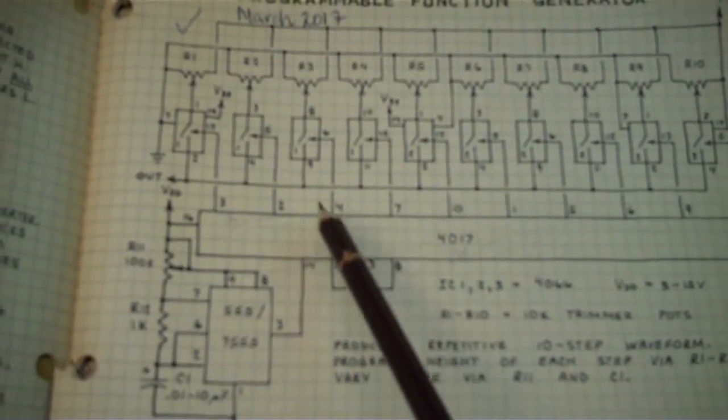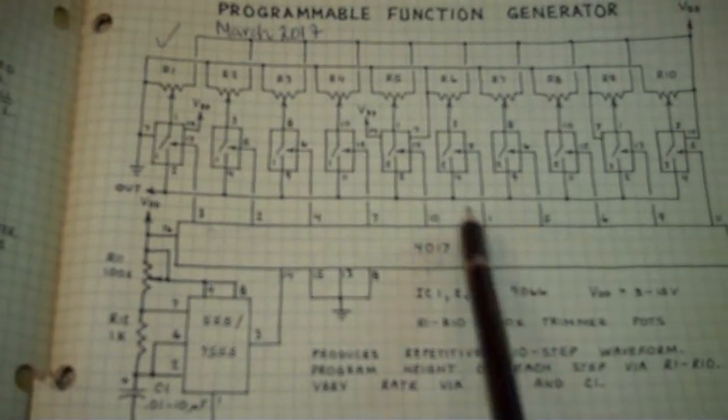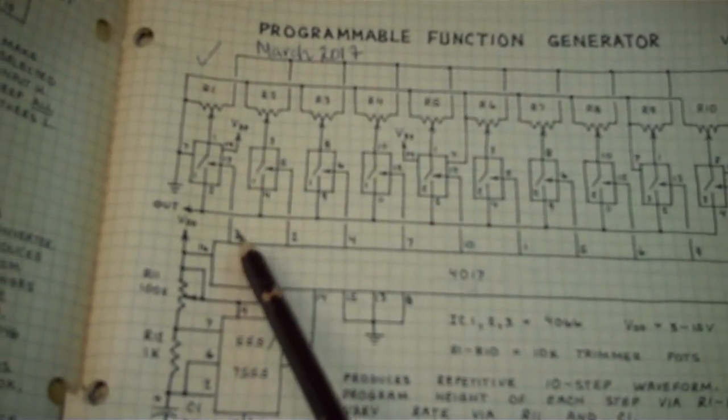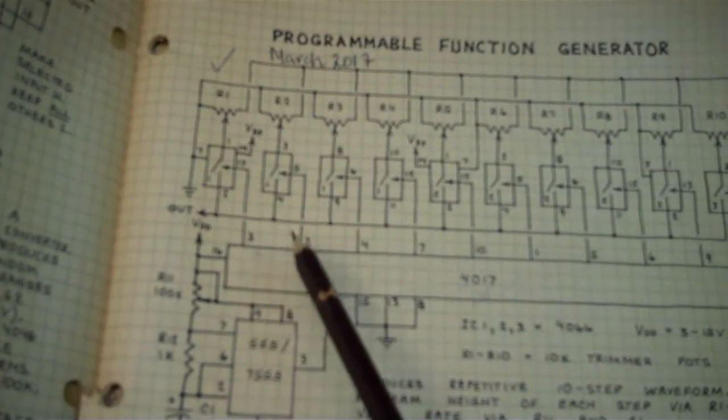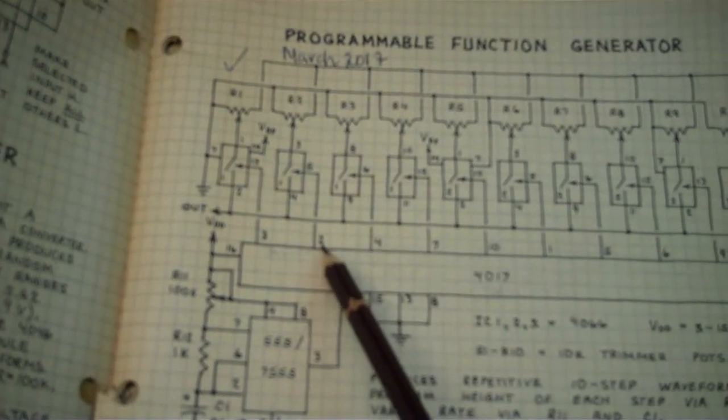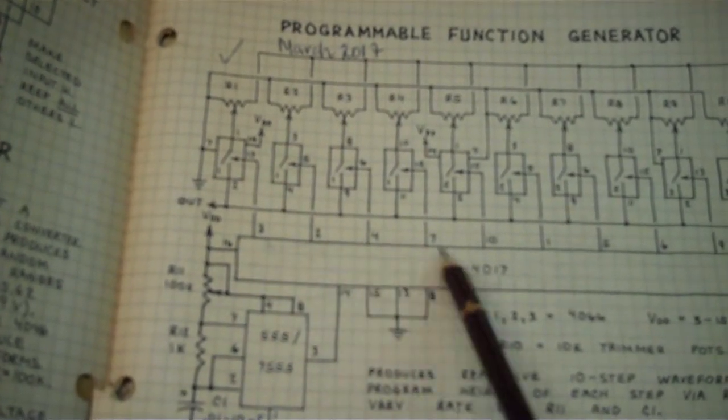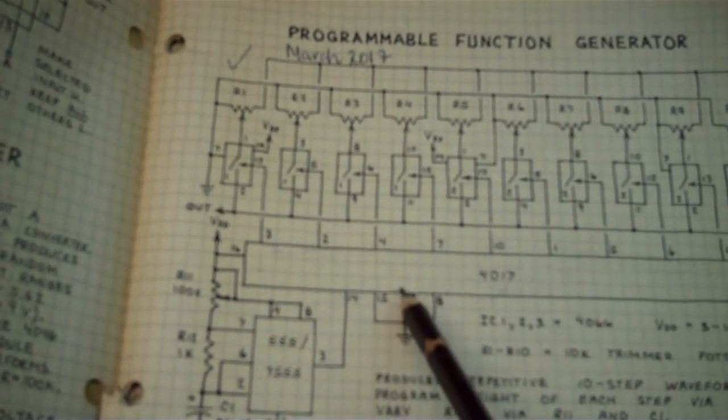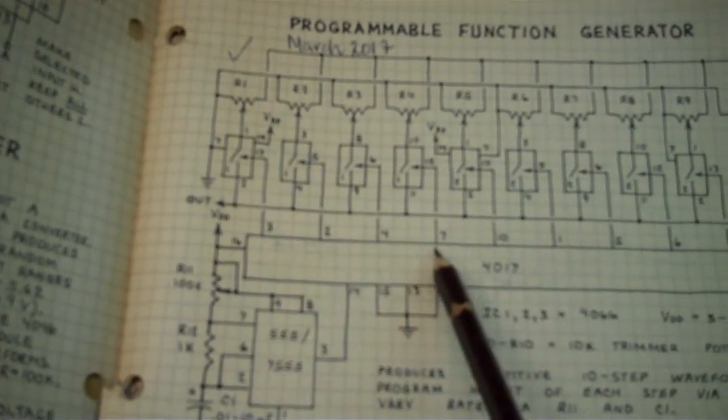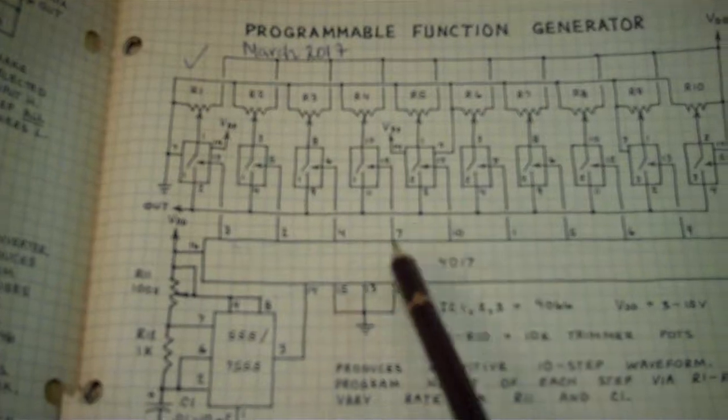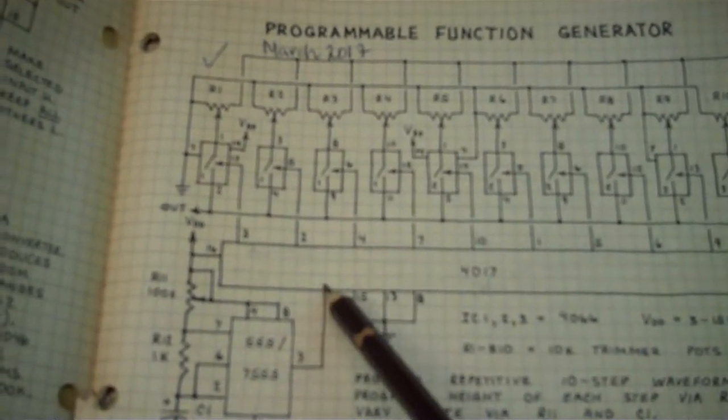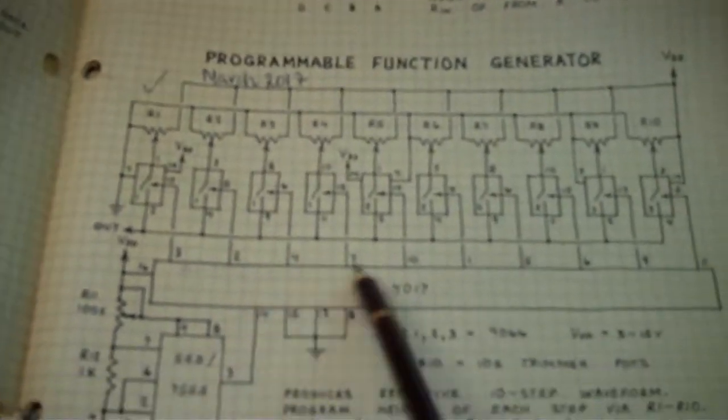So let me tell you how this works. Clock signal goes into the 4017. Remember, it's got 10 outputs. It's a decade counter. First clock pulse comes in. That first output is high. All the rest are low. Second clock pulse comes in. The second output is high. First one's low. All the other ones are low. Third clock pulse comes in. The third output goes high. First two are low. All the rest are low too. As you can see, it just cycles through it. So it actually has a high output, essentially, but sequentially going through the chip.